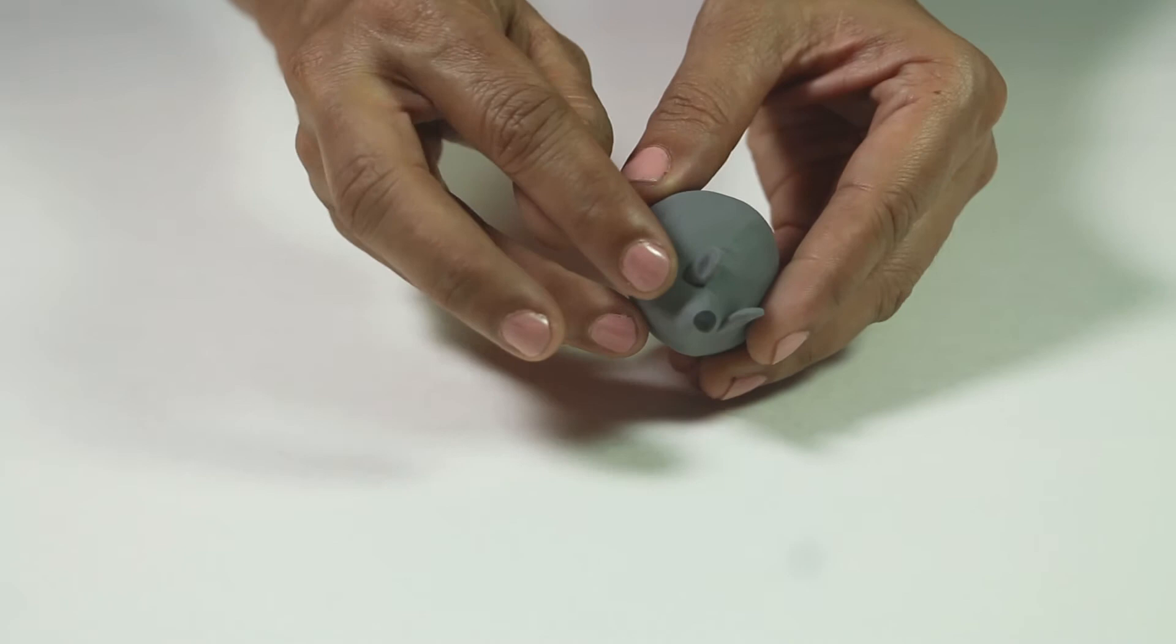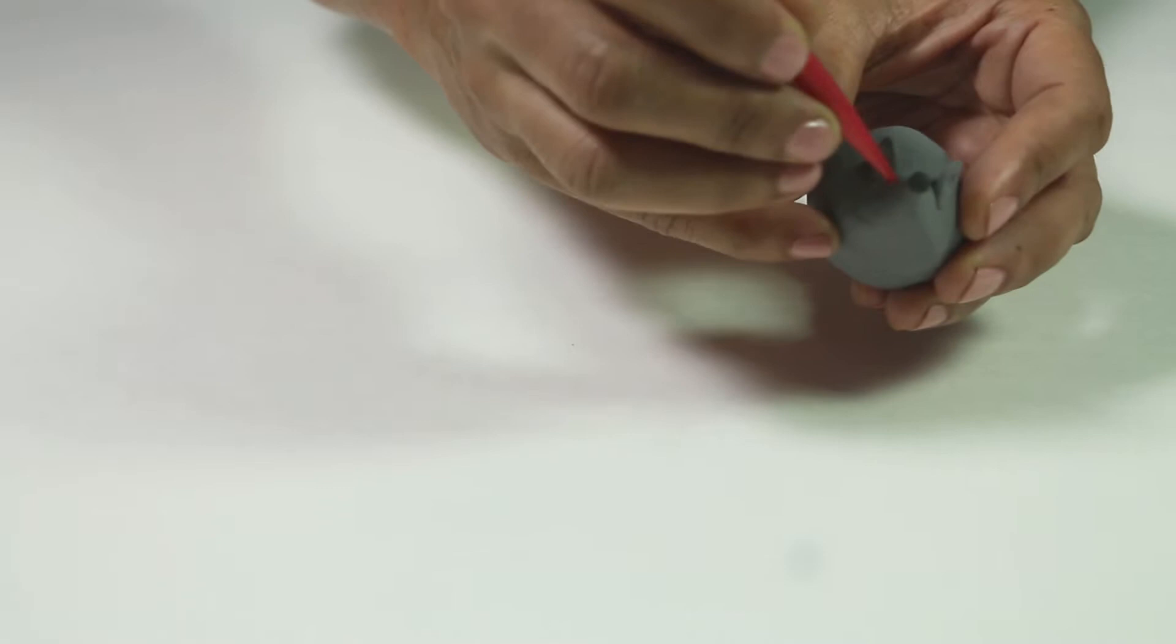Make two holes using a tool or tip of a pencil to make the eyes of the porcupine.